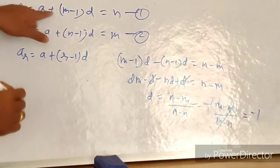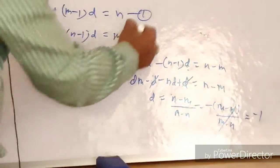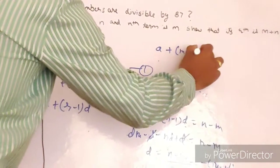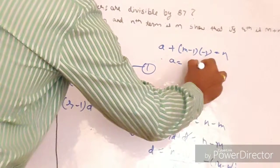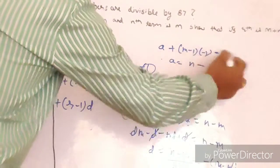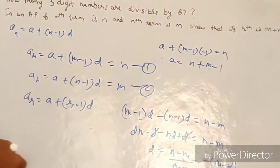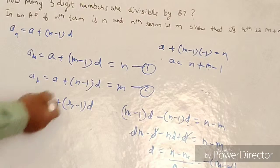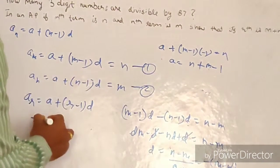Now that d = −1, we substitute back into the first equation: a + (m − 1)(−1) = n, so a − m + 1 = n, giving a = n + m − 1.